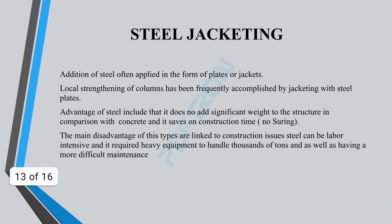Steel jacketing involves the addition of steel, often applied in the form of plates or jackets. Local strengthening of columns has been frequently accomplished by jacketing with steel plates. The advantages of steel include that it does not add significant weight to the structure in comparison with concrete, and it saves on construction time. The main disadvantages are linked to construction issues: steel can be labor intensive, requires heavy equipment to handle, and has more difficult maintenance.